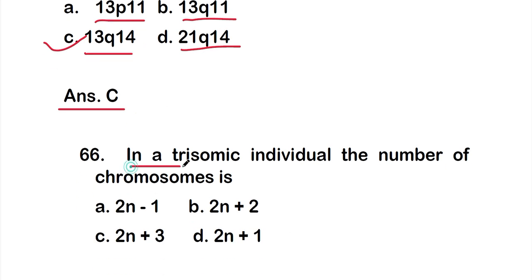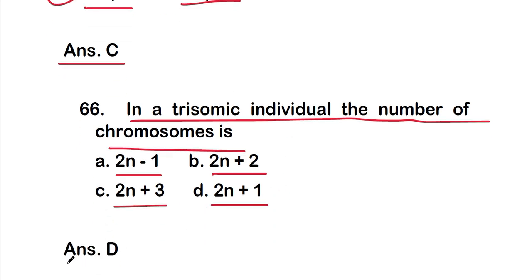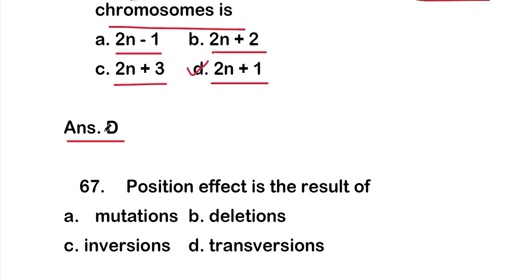Question 66: in a trisomic individual, the number of chromosomes is — Option A: 2n minus 1, Option B: 2n plus 2, Option C: 2n plus 3, Option D: 2n plus 1. The right answer is Option D — 2n plus 1. In a trisomic individual the chromosome number is 2n plus 1.